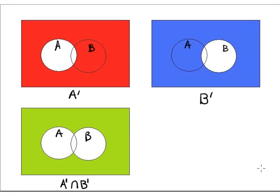To see this more clearly: A complement is completely outside A, B complement is completely outside B, and their intersection is the common part that is outside A and outside B.